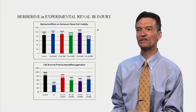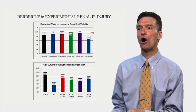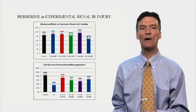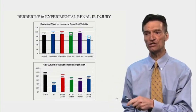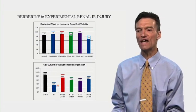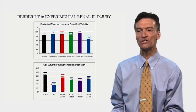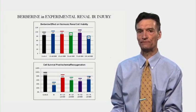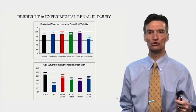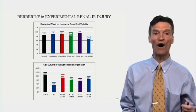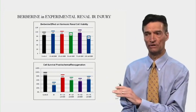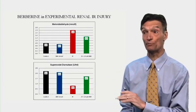Berberine has no toxic effects on normal kidney cells, but the loss of oxygen followed by reoxygenation leads to cell death of 50% of the cells. This is blunted by co-treatment with berberine. So the ability of the cells to survive hypoxia-reoxygenation is increased with berberine.